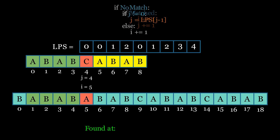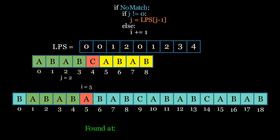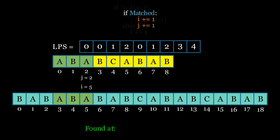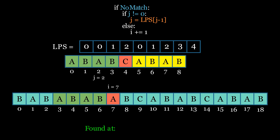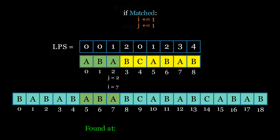If a mismatch occurs again and j is not 0, we update j to the value at index j minus 1 in the LPS table and continue. Observe how the algorithm avoids rechecking the elements that have already been matched in the prefix. This is how the KMP algorithm efficiently handles pattern matching — by using the LPS table to skip unnecessary comparisons and avoid rechecking matched prefixes. Also observe that the pointer i is not backtracking, which shows that the algorithm operates in linear time.